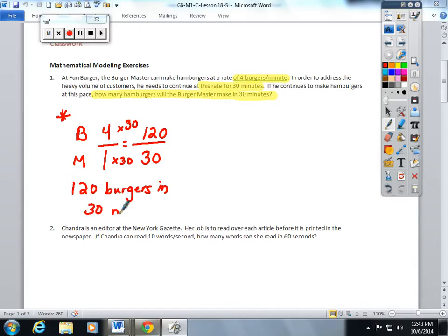There is another way to do this. You can start with the original fraction they gave you, four burgers per one minute, and you can multiply it by 30 minutes.